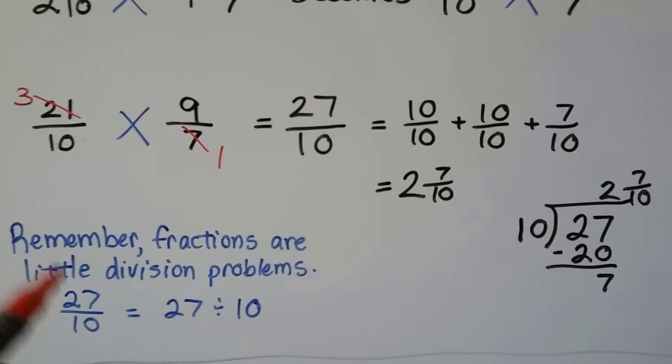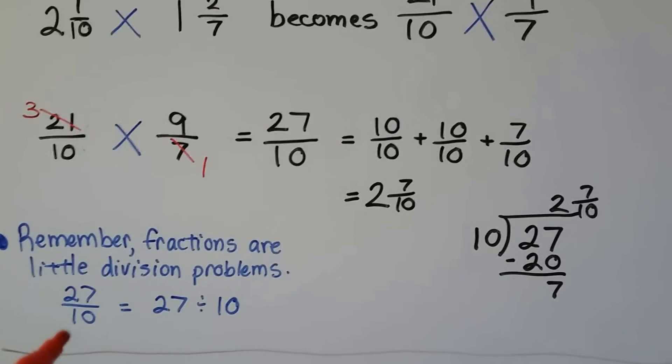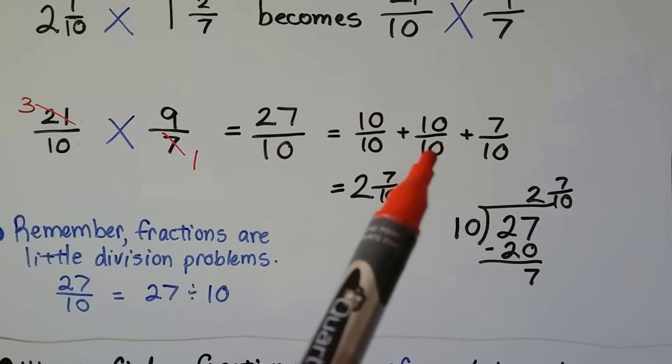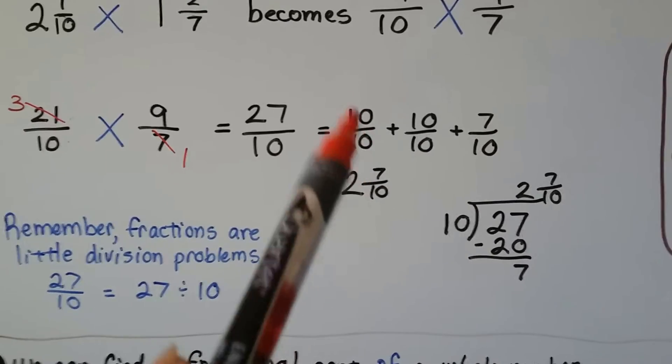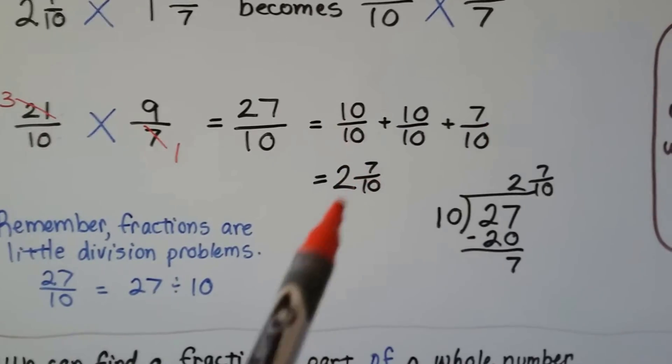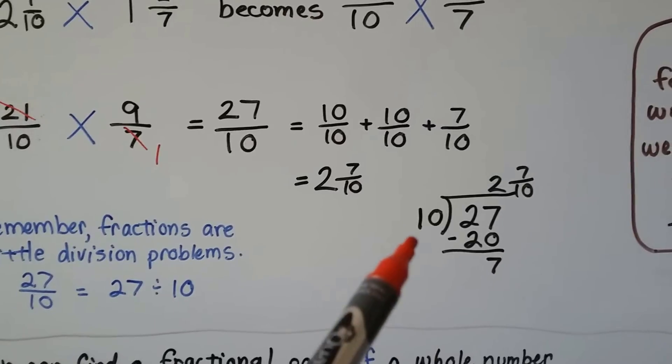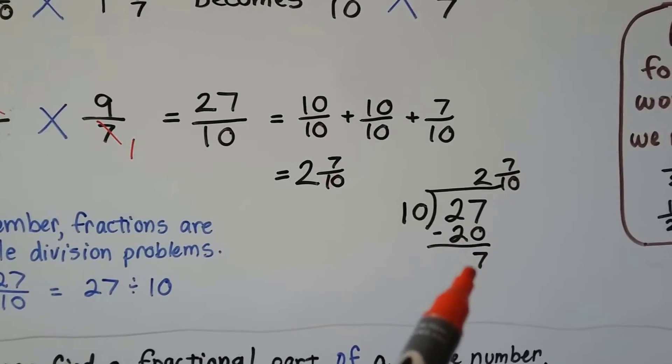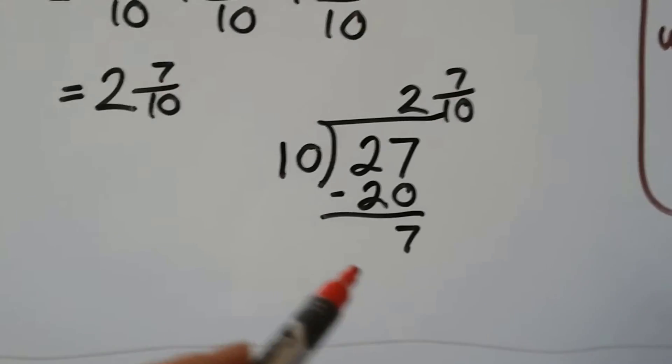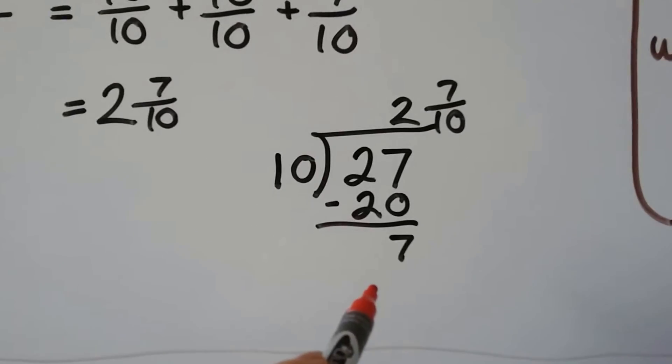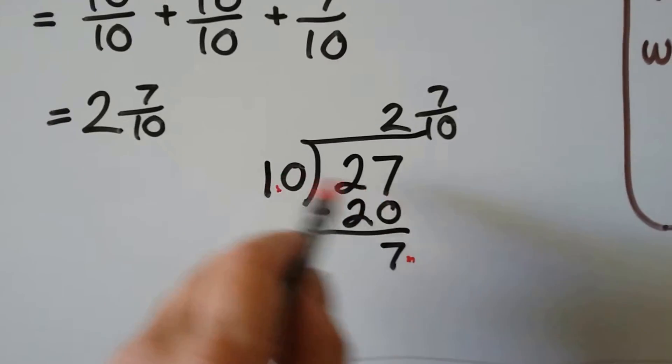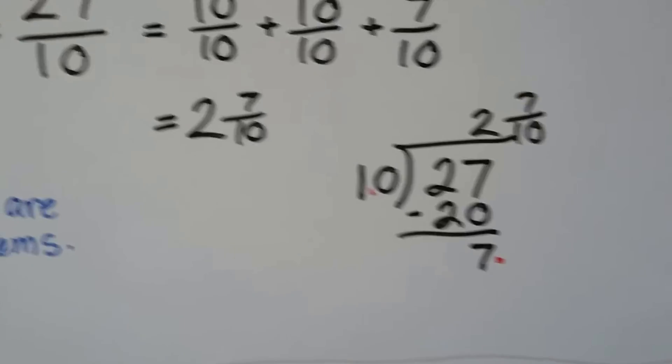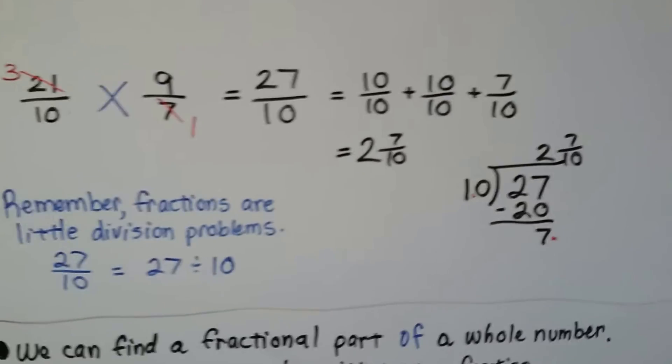And we have 3 times 9 is 27 and 10 times 1 is 10. And you have to remember that fractions are little division problems. This is basically saying 27 divided by 10. So how many 10s are in 27? 2. We can pull out a 10/10 and then another 10/10 and have a 7/10 left over. That's one whole. That's another whole. So that's 2 whole and the 7/10. You can also do it the long division way and do 10 goes into 27 2 times. 10 times 2 is 20. We do our subtraction get the 7. And if you remember from my previous videos on long division of one, two, three digit divisors, this is the numerator and that is the denominator. 7/10. The remainder is the numerator and the divisor is the denominator. You also can look at it this way.